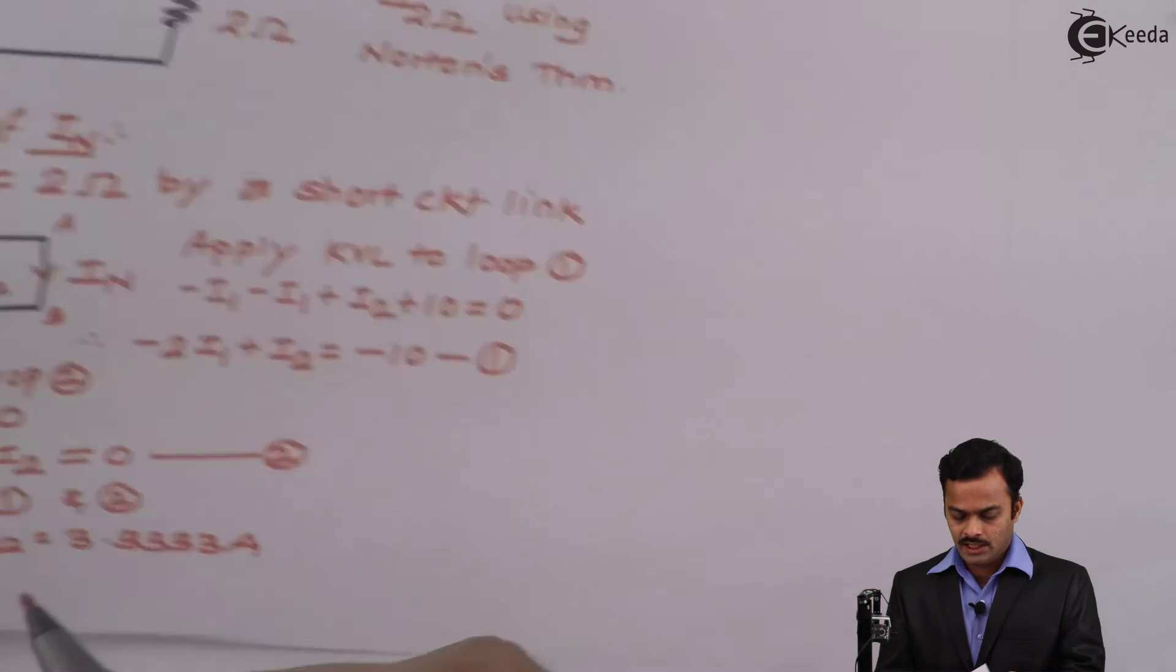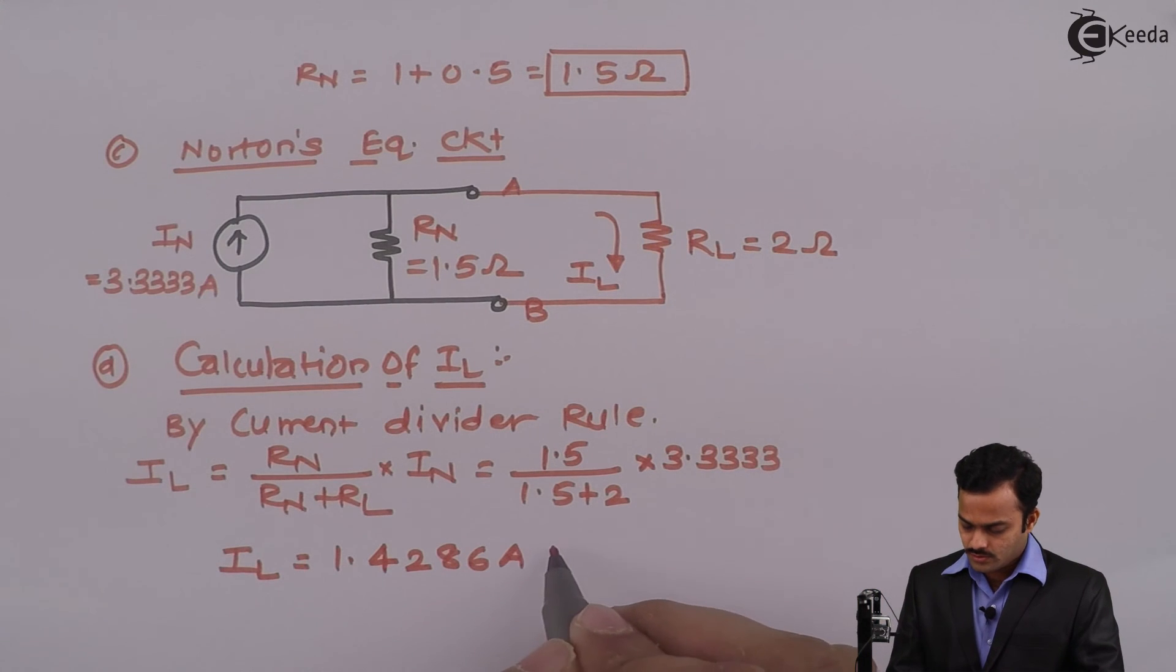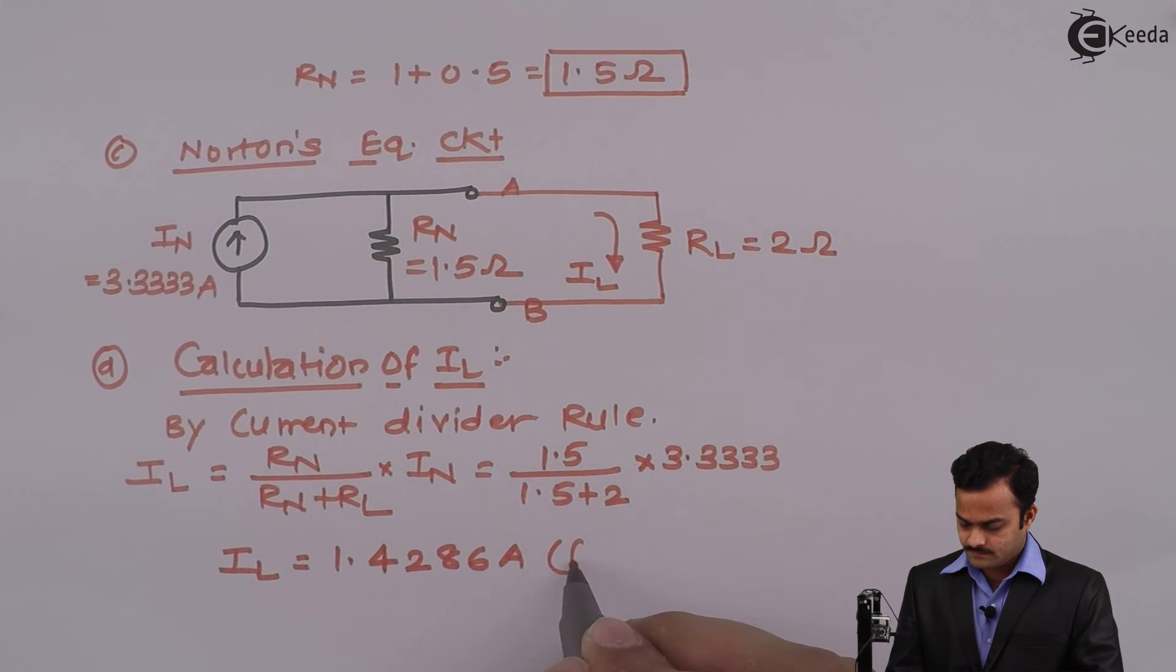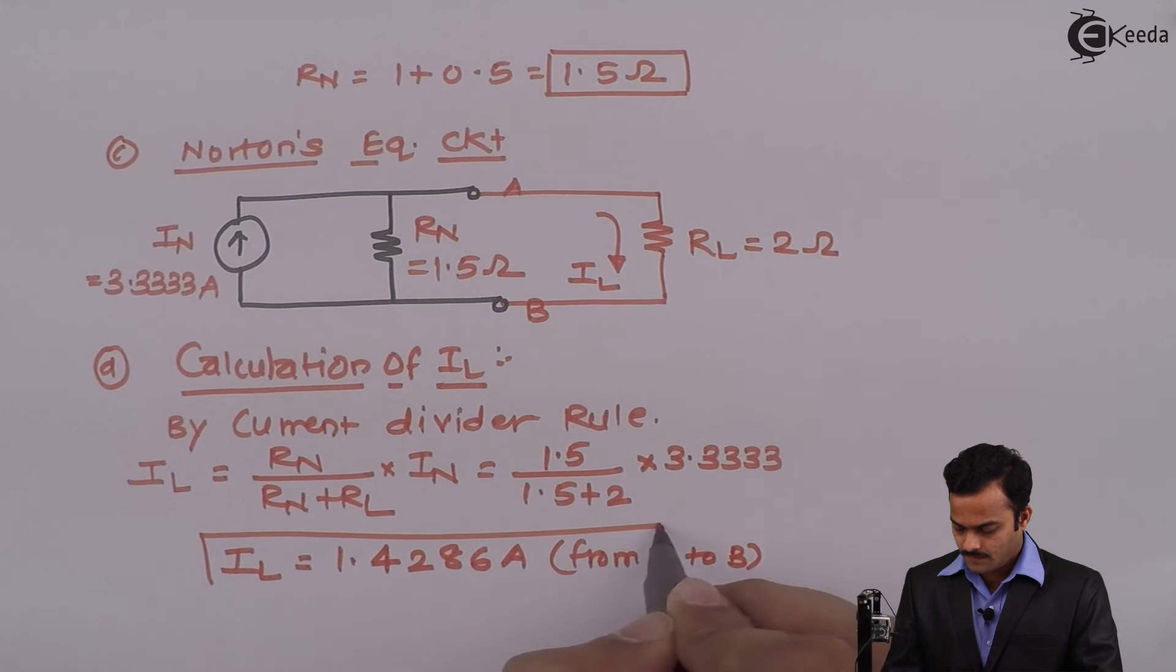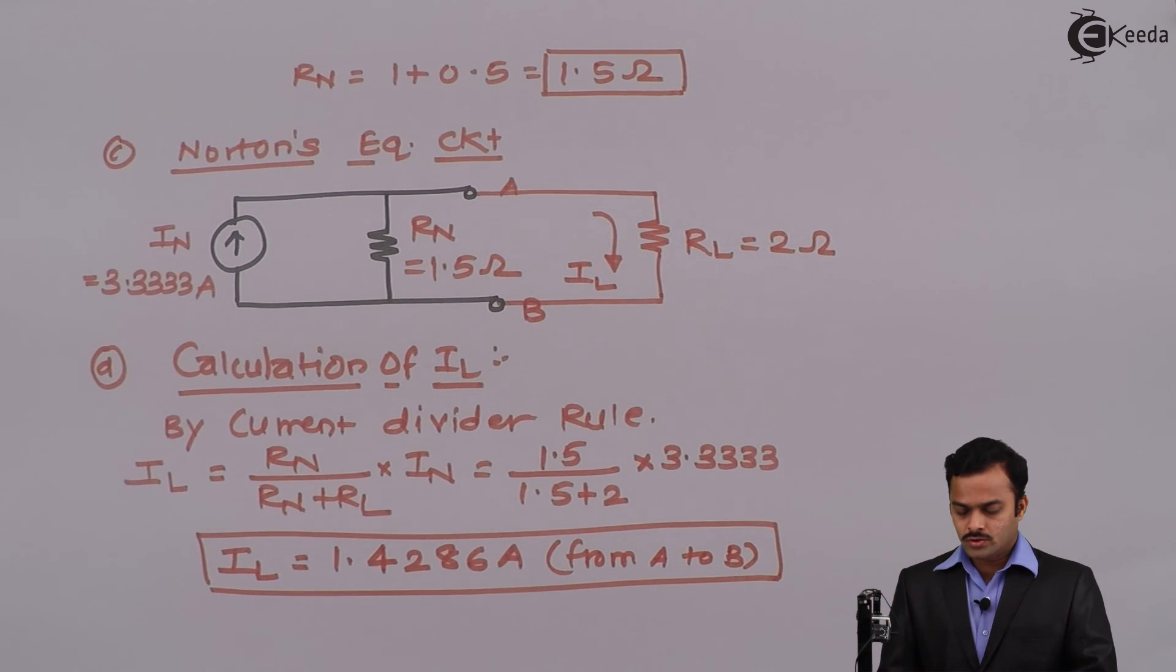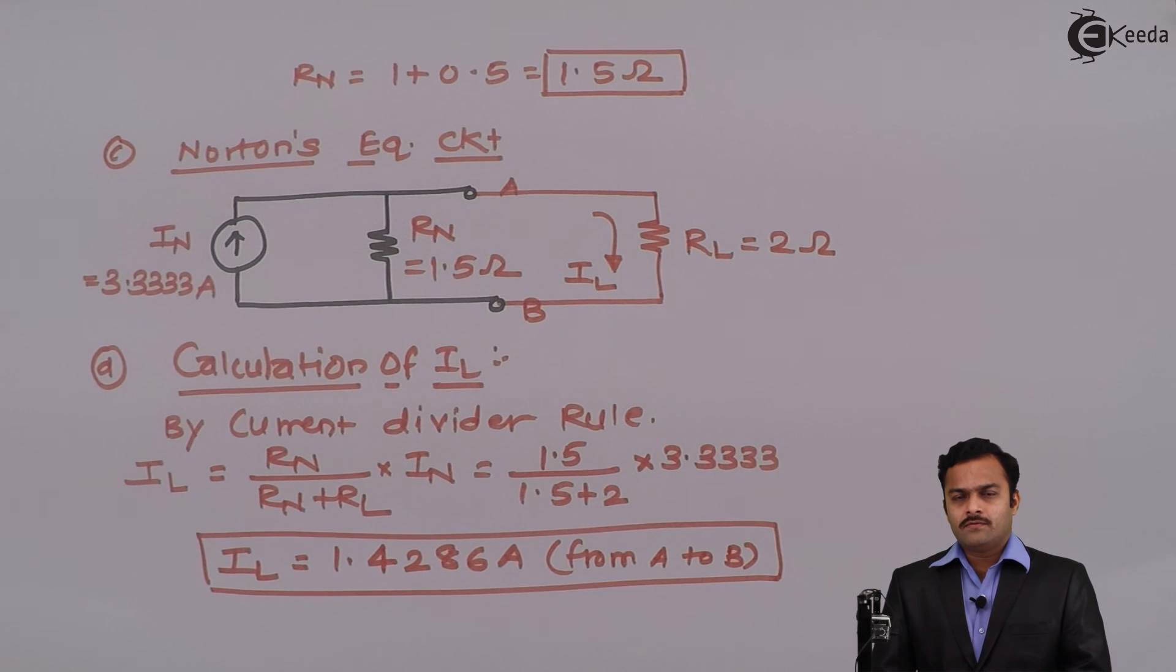And now for this I am getting a Norton current flowing from A to B, so here also I can write a direction from A to B. So this will be the answer for the question that is asked: what is the current flowing through a 2 ohm resistance? In subsequent videos we will solve more numerical based on Norton's theorem. Thank you.